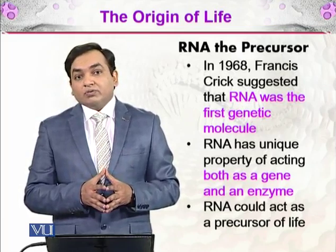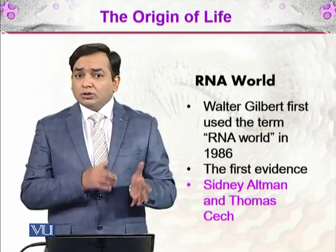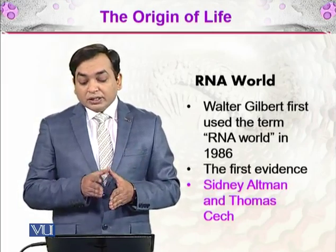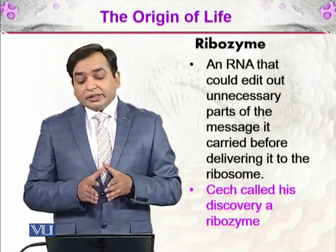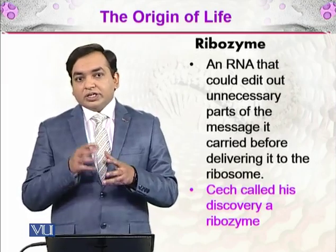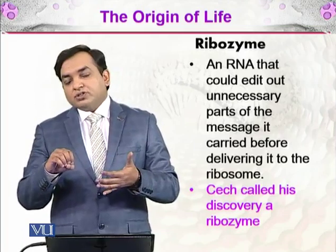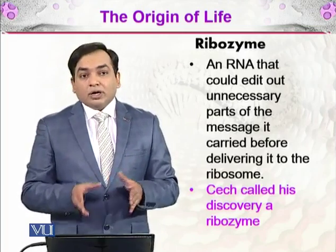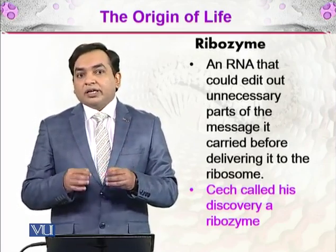Francis Crick was on the right track. Walter Gilbert first used the term 'RNA world' in 1986. Although it was a very controversial term at that time, today scientists agree on it. The first evidence came from Sidney Altman and Thomas Cech, who discovered an RNA that could edit out unnecessary parts of a message before delivering it to the ribosome. They found that an RNA was carrying messenger RNA to the ribosome, but before doing so, it cut some parts — it was editing that messenger RNA. Cech called this discovery a ribozyme. That is why we refer to RNA as acting as an enzyme.